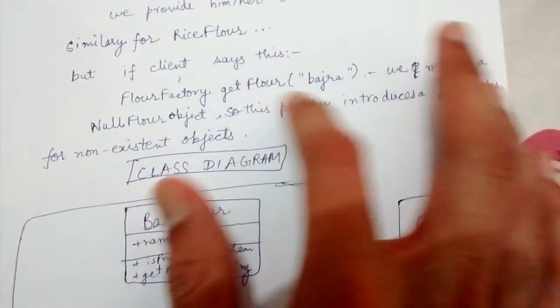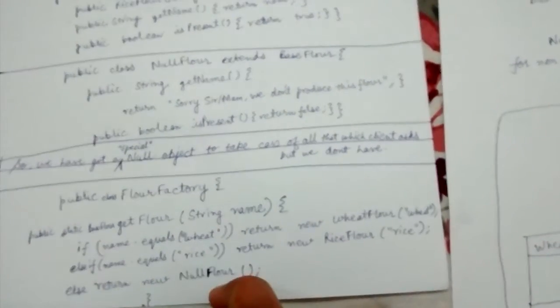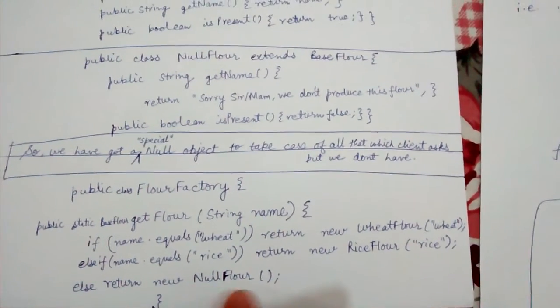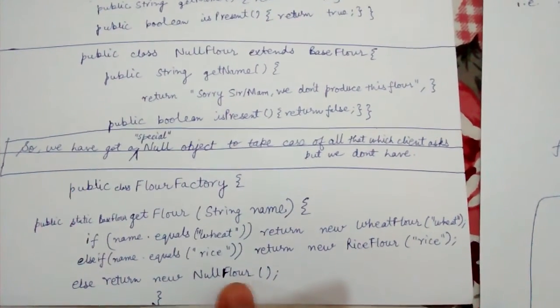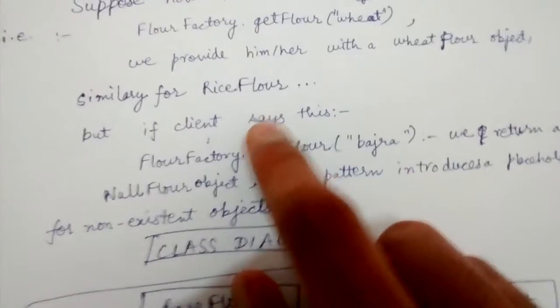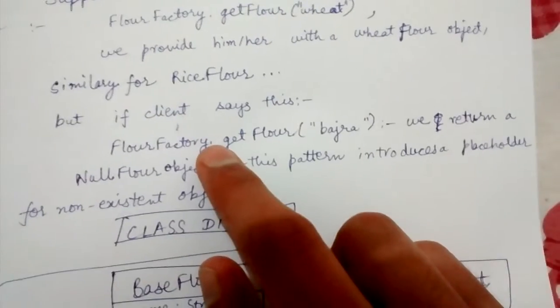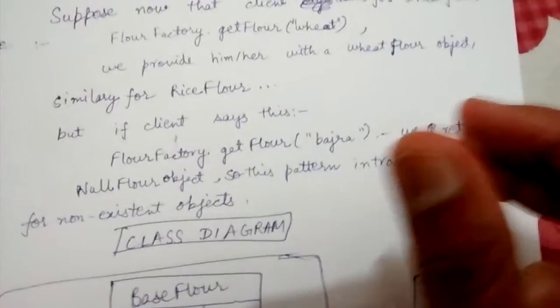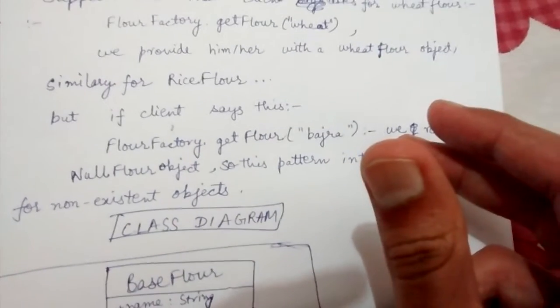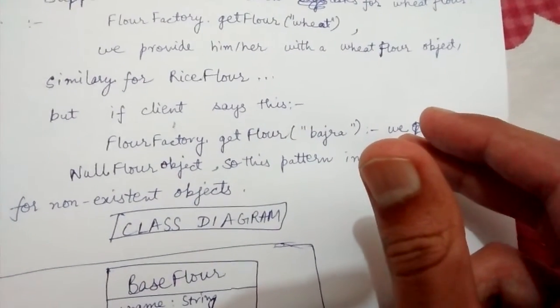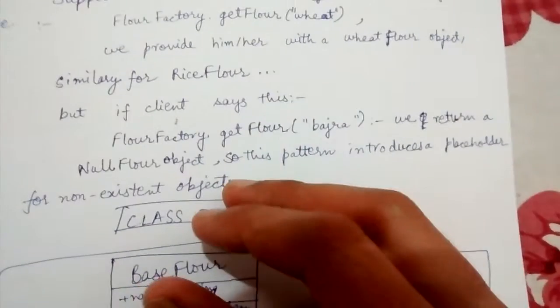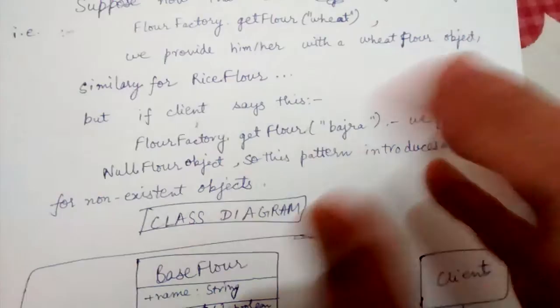If we don't have this NullFlour object, our flour factory will fail or throw an exception, and we don't want that. So this placeholder object is introduced for that purpose. If our customer asks for bajra flour, we return a null object, which is basically a placeholder object. If they ask for pulse flour, we also return the same null object. Whatever objects we don't have, we provide them with the null object.